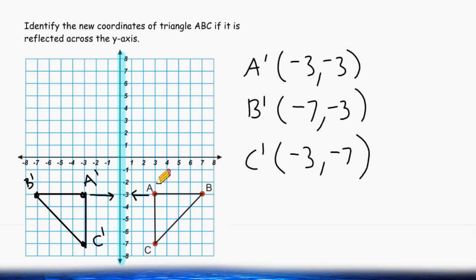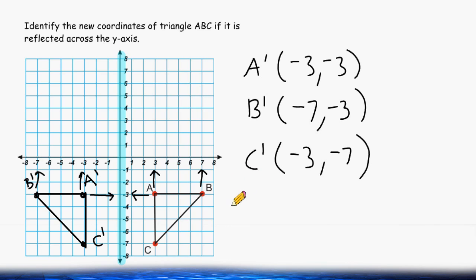However, the x-values for the reflected points will become opposite of what they were. Notice that the original point A had an x-value of positive three, and after reflecting it, it was negative three. For point B, the x-value was positive seven, and after reflecting it, it turned into negative seven. So one strategy you can use in the future for reflecting anything across the y-axis is to record the original points and then just make the x-values opposite of what they are, keeping the y-values the same.